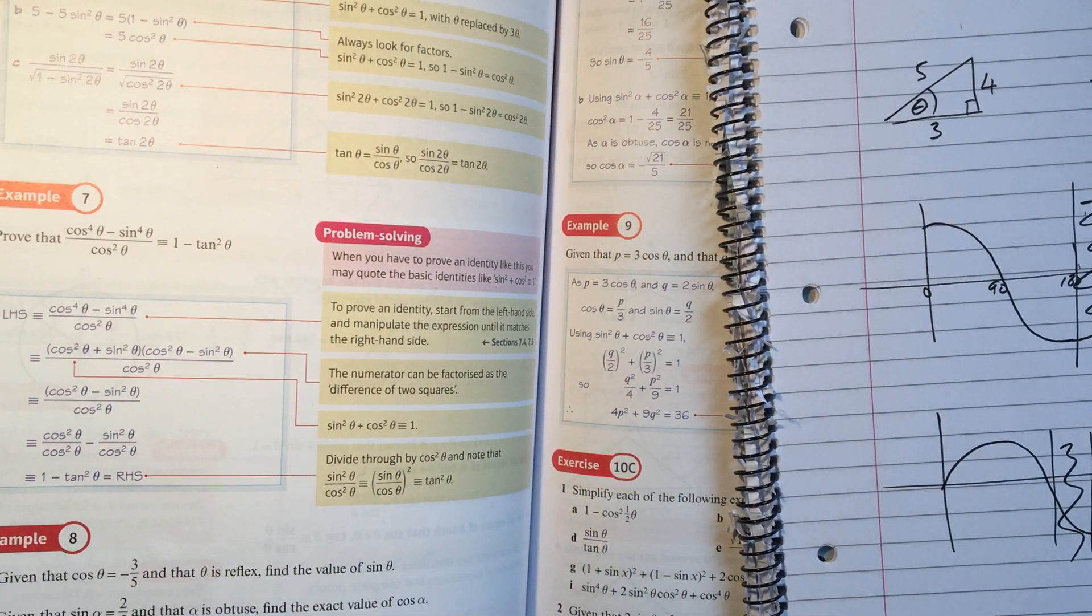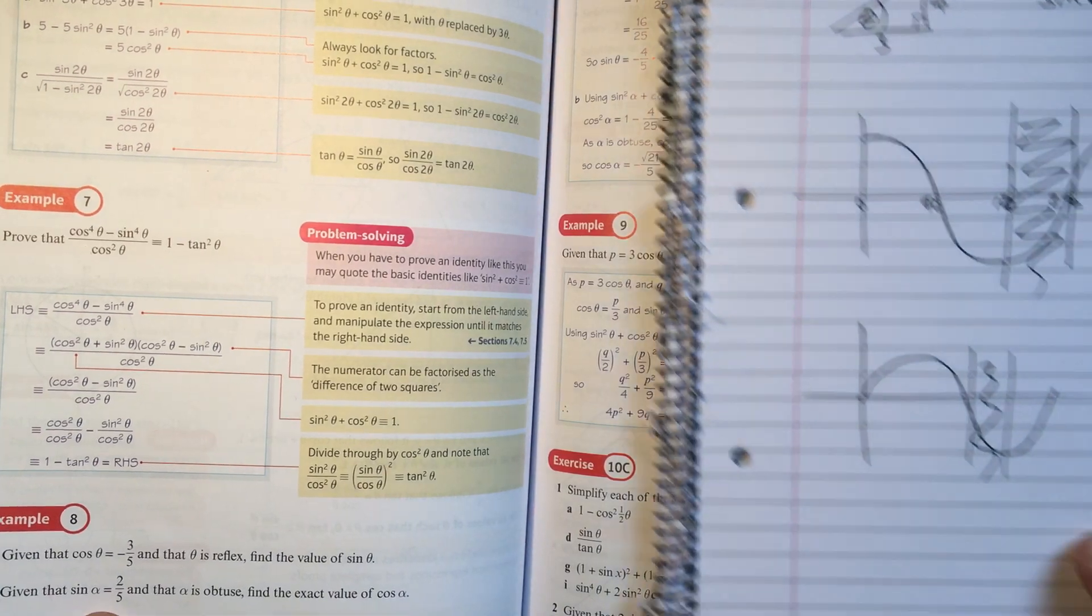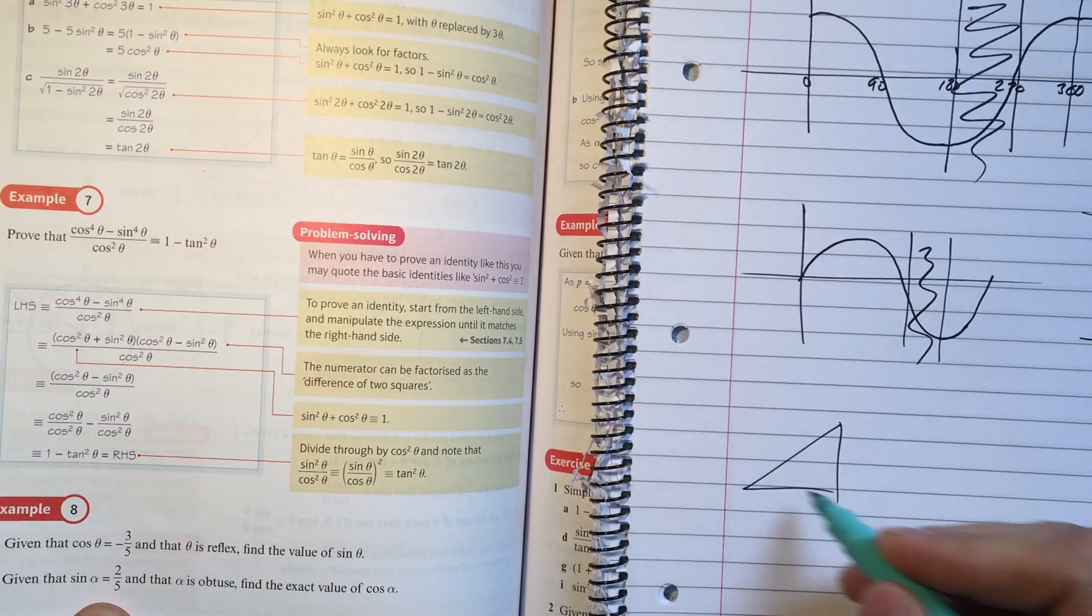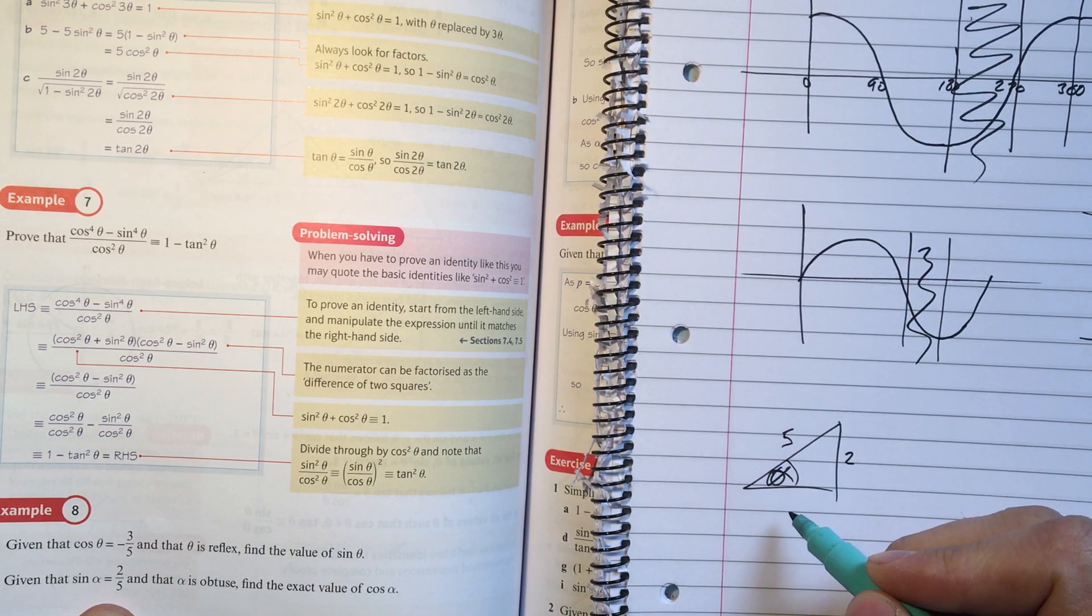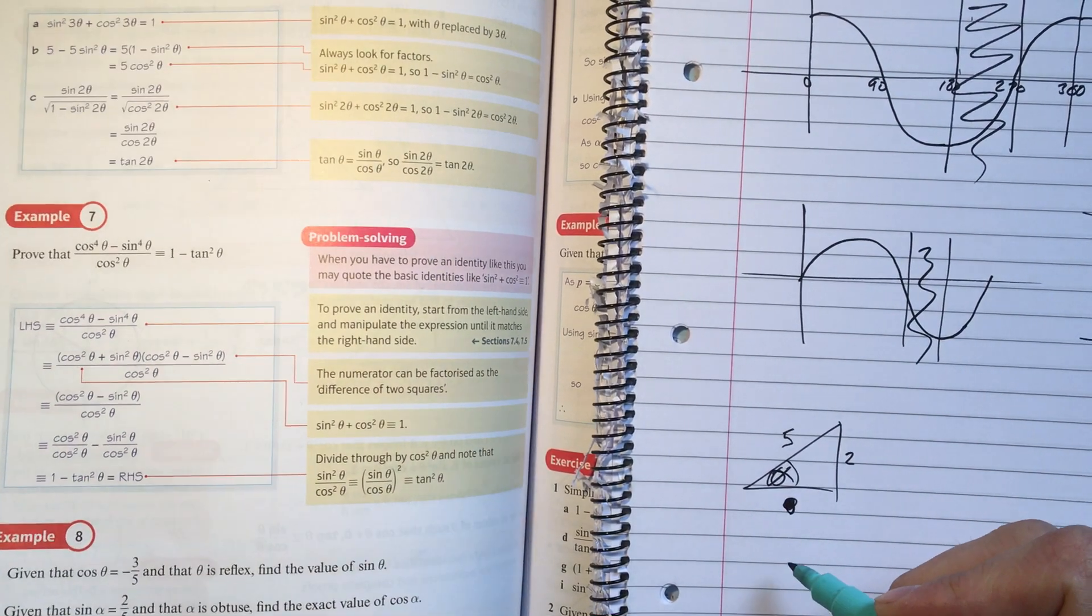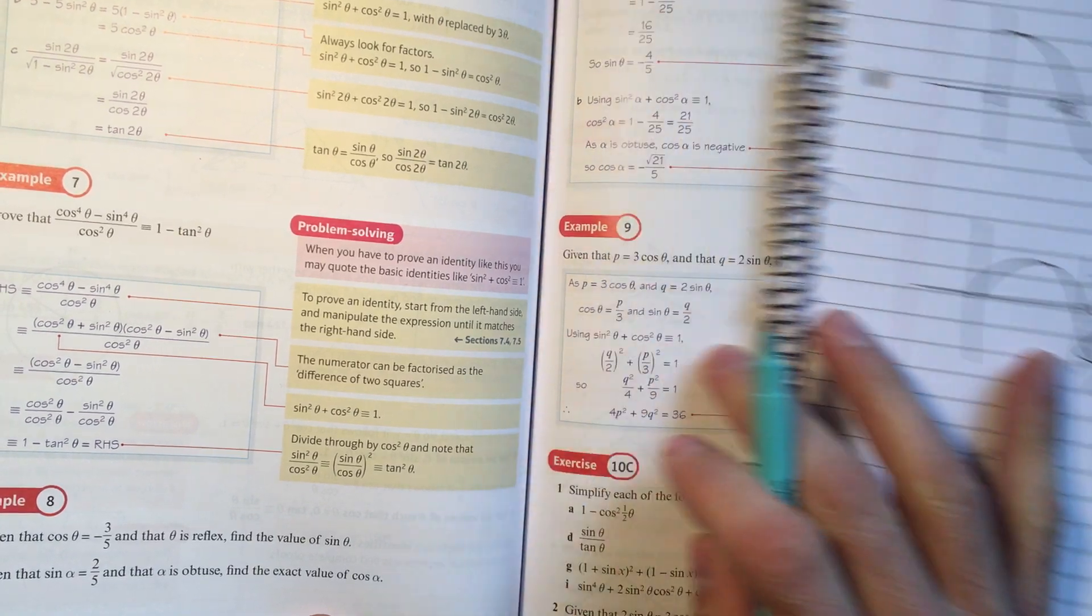Okay, so part B, sine of alpha is two-fifths. Imagine alpha is an acute angle. Draw your diagram. There's our angle alpha. Opposite over hypotenuse is two-fifths. And then work from there. Work out this one by Pythagoras' theorem. Then cosine of alpha is going to be this number divided by five.